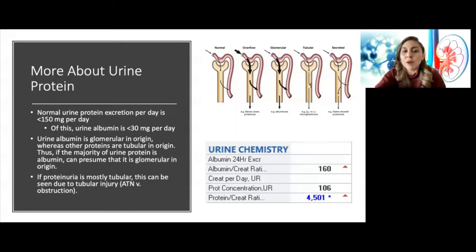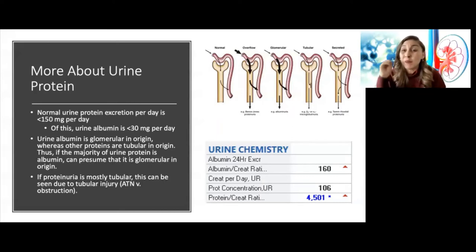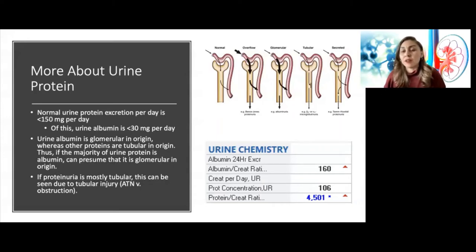When patients get acute tubular necrosis, tubular proteins that are sometimes absorbed — and also produced by tubules — get leaked out in the urine when tubules aren't functioning. This does not signify glomerular disease because these are tubular proteins. Always helpful to check both. The normal urine protein excretion is less than 150 mg/day, and urine albumin should be less than 30 mg/day. A take-home point: ATN can lead to tubular proteinuria, so if your patient has a clinical picture of ATN and the UPCR is elevated, don't assume you're missing a glomerular disease — unless there are other reasons like dysmorphic RBCs.